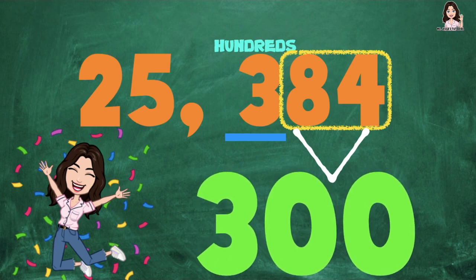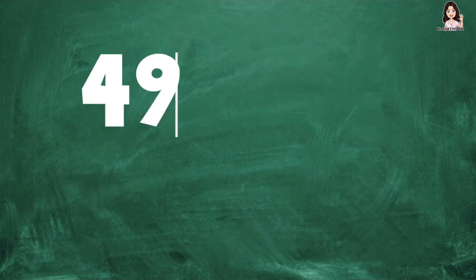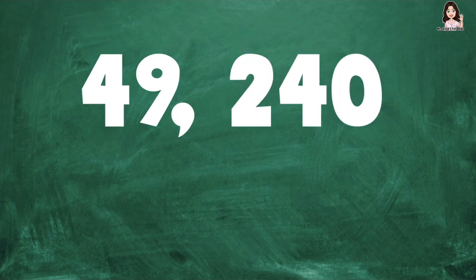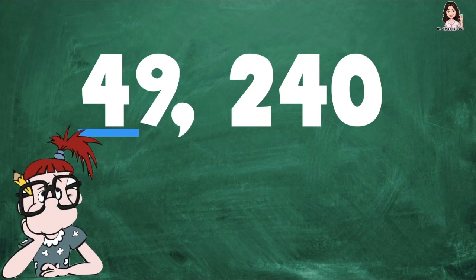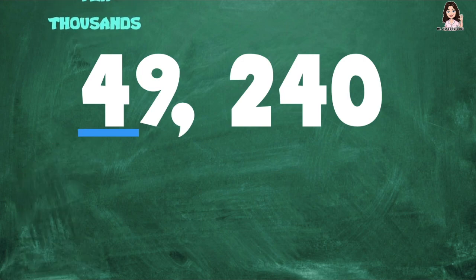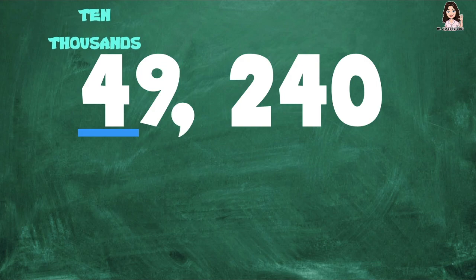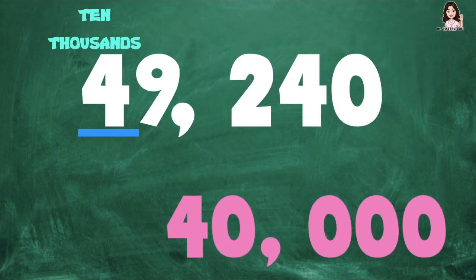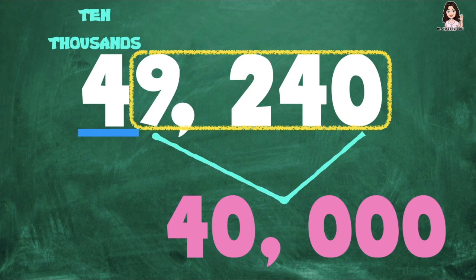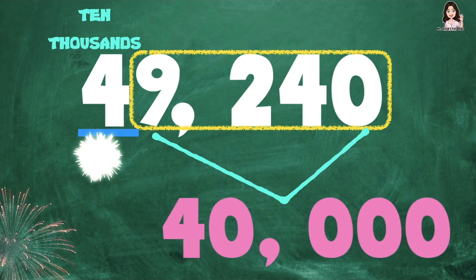Let's proceed to the next example. I have 49,240. What is the value of digit 4? Since digit 4 is at the ten thousands place, the value of digit 4 is 40,000. Always remember, children: all the digits to the right of digit 4 will become zeros. So the value of digit 4 at the ten thousands place is 40,000.